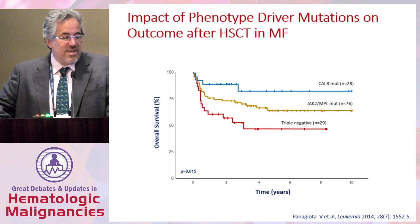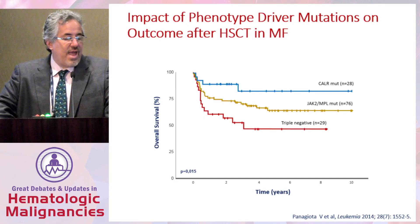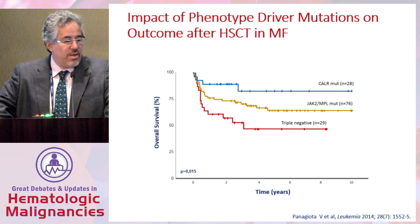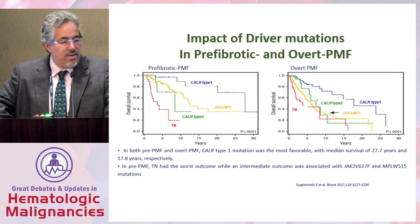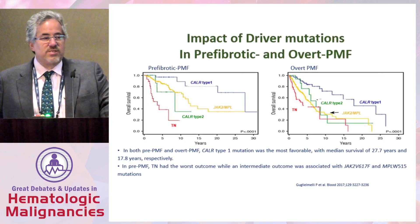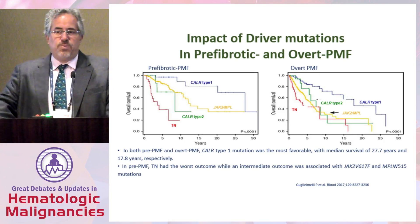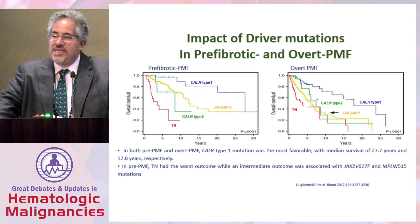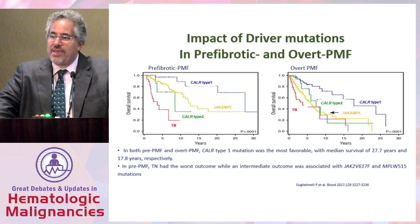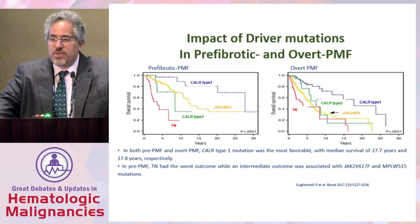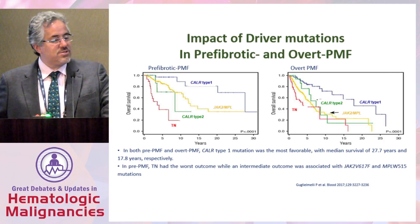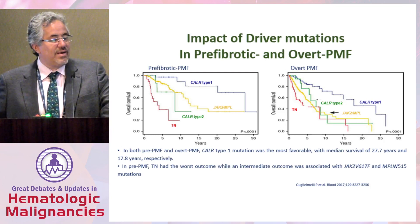Individuals have looked at outcomes after stem cell transplantation, and one can predict that triple negative individuals will have worse outcomes with stem cell transplant. Now in myelofibrosis, one evolving area is recognizing a spectrum of disease. Those with, quote, pre-fibrotic myelofibrosis versus more overt myelofibrosis — this pre-fibrotic group is one we probably would have labeled as ET in the past, but they were likely more problematic: perhaps with splenomegaly, leukocytosis, or a little leukoerythroblastosis. These individuals can be triple negative and clearly have worse outcomes and a higher rate of progression.